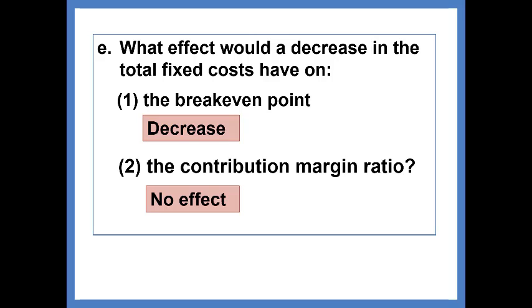Now, again, here you could make up some numbers and decrease total fixed costs to something like $40,000, as opposed to the original $50,000, and crunch the numbers and see that this is, in fact, the effect of this.